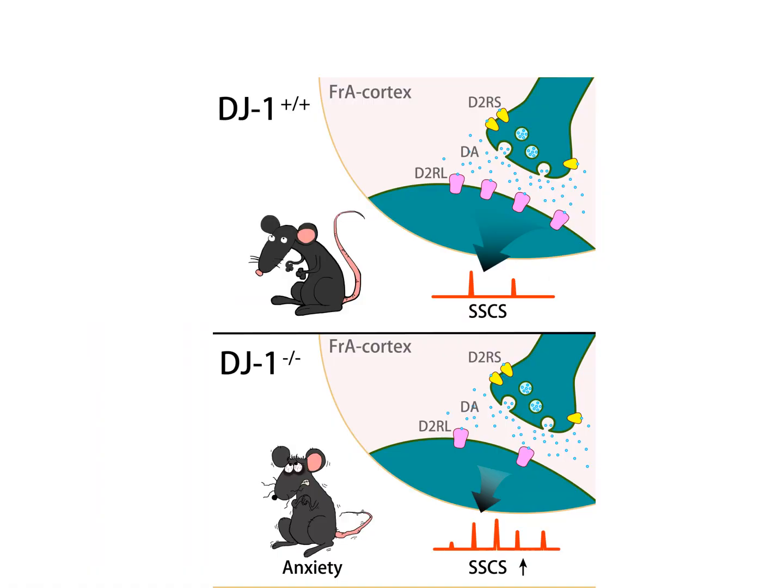To our knowledge, this is the first functional phenotype of individual neurons in an awake PARK7 mouse model through two-photon imaging, and this may shed light on the mechanisms underlying Parkinson's disease.